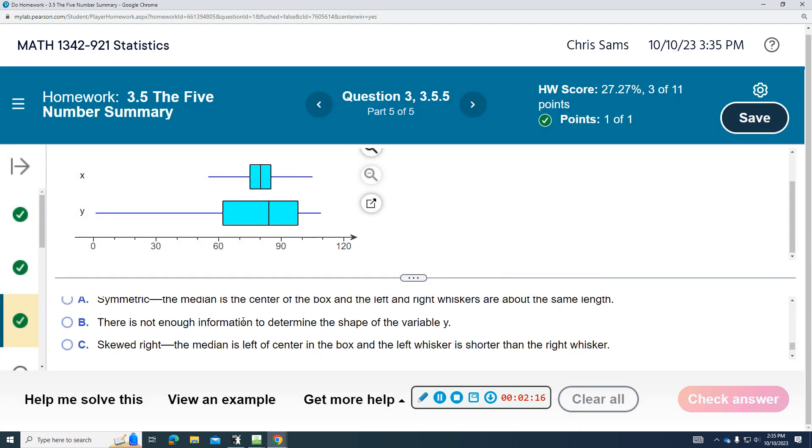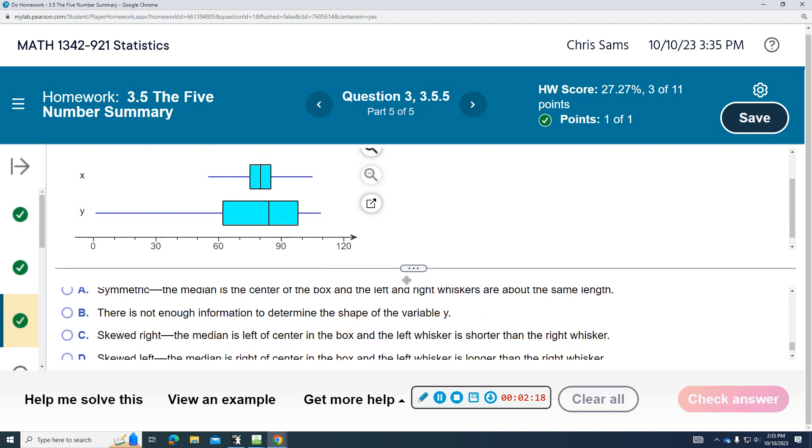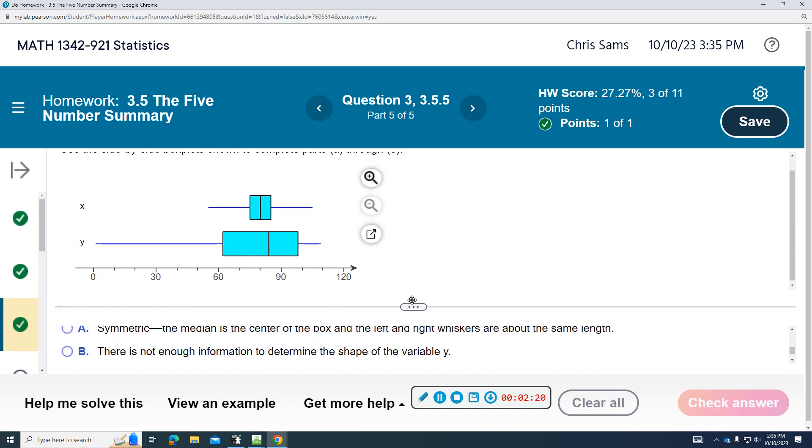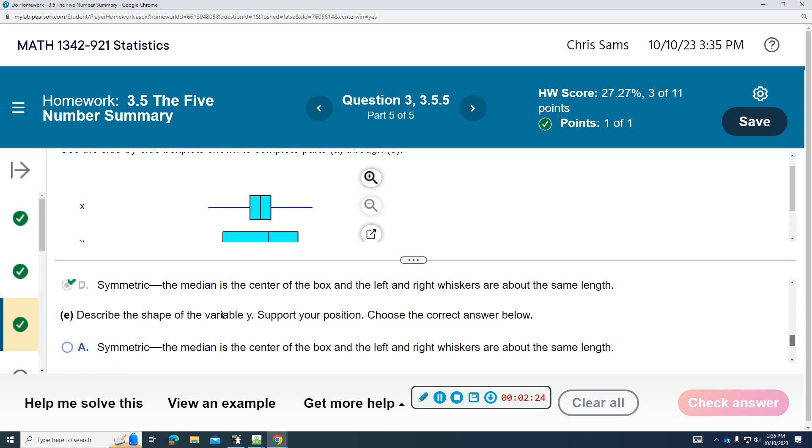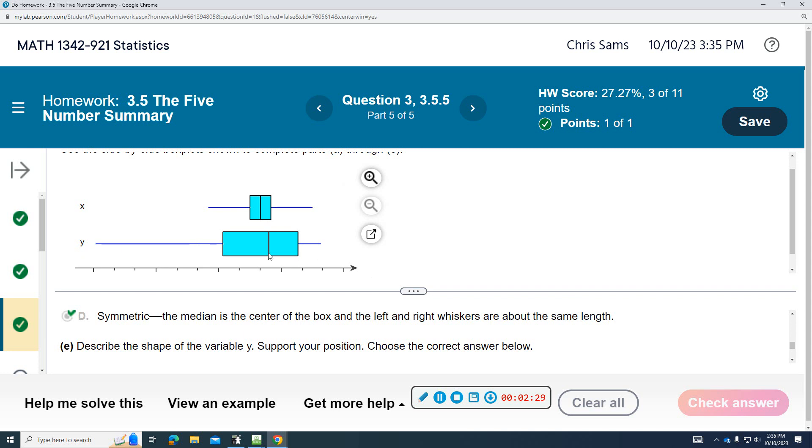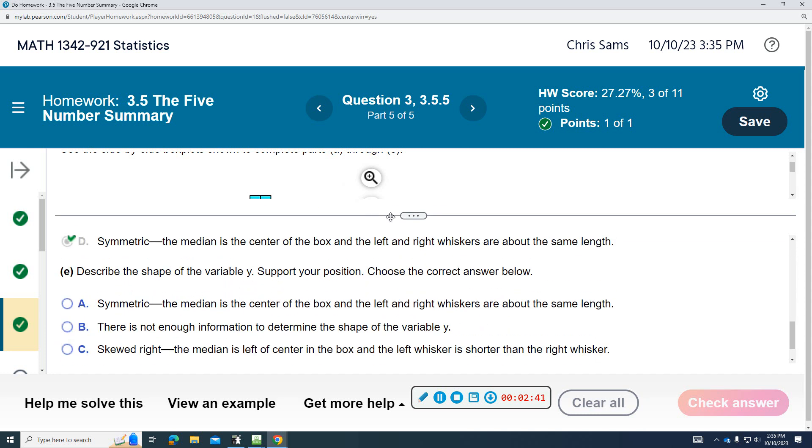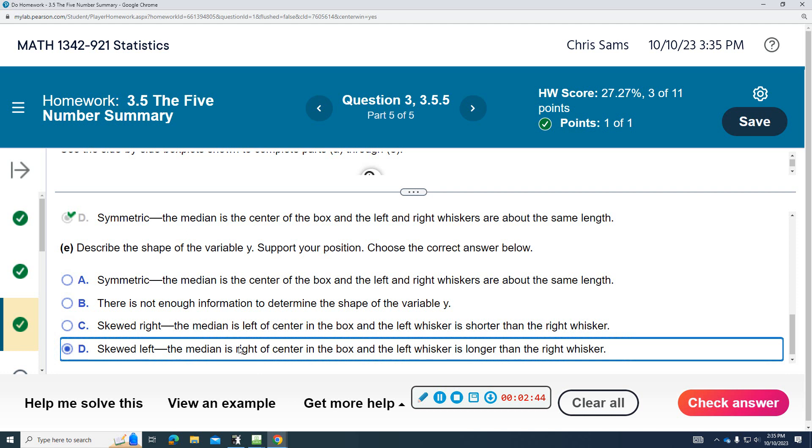And then E, the last part, wants to know describe the shape of variable Y. So Y is this one. And the whisker on the left hand side is much longer than the one on the right. So this would indicate that the graph is skewed to the left because the left side is much longer. And so we would say skewed to the left.